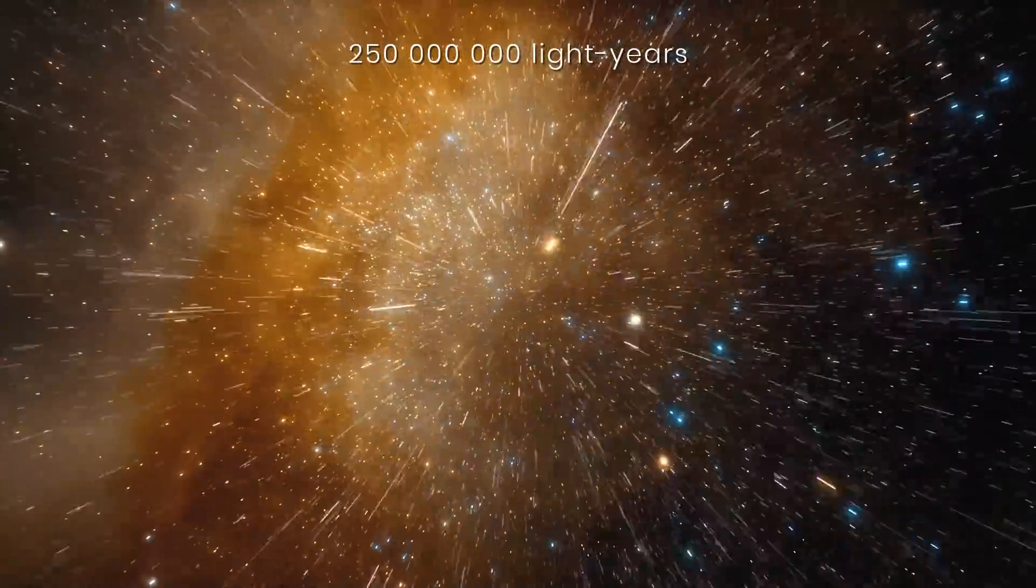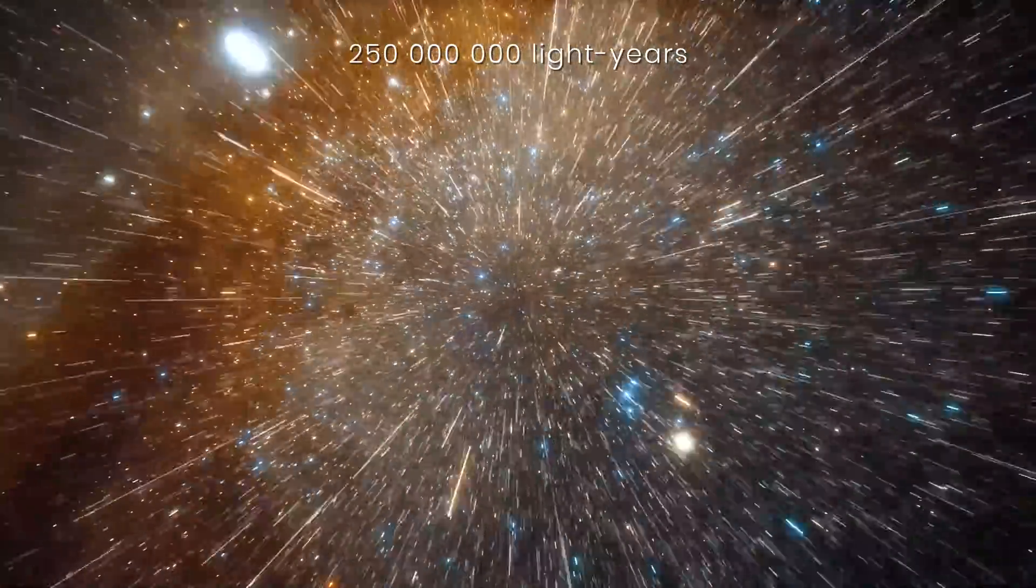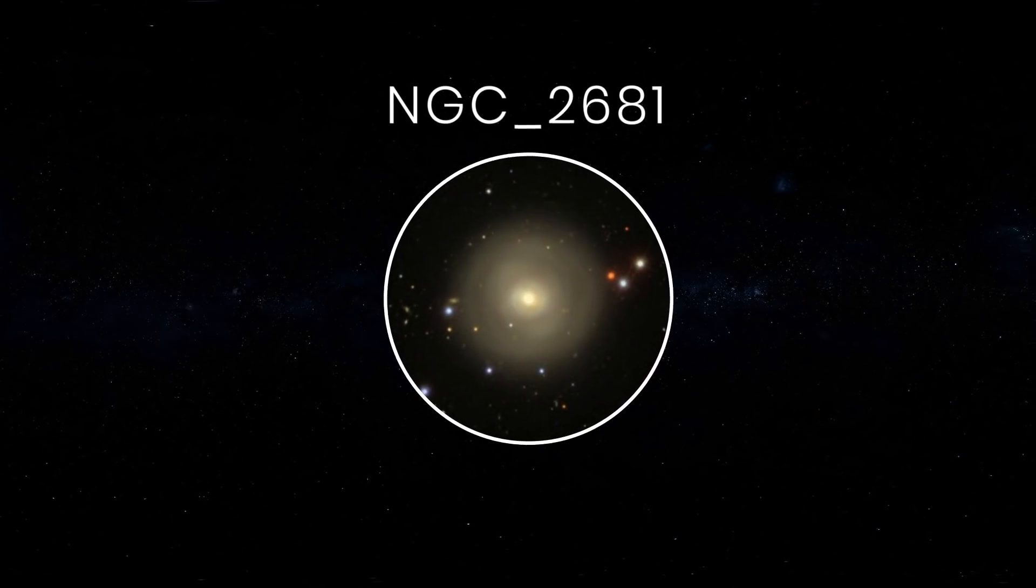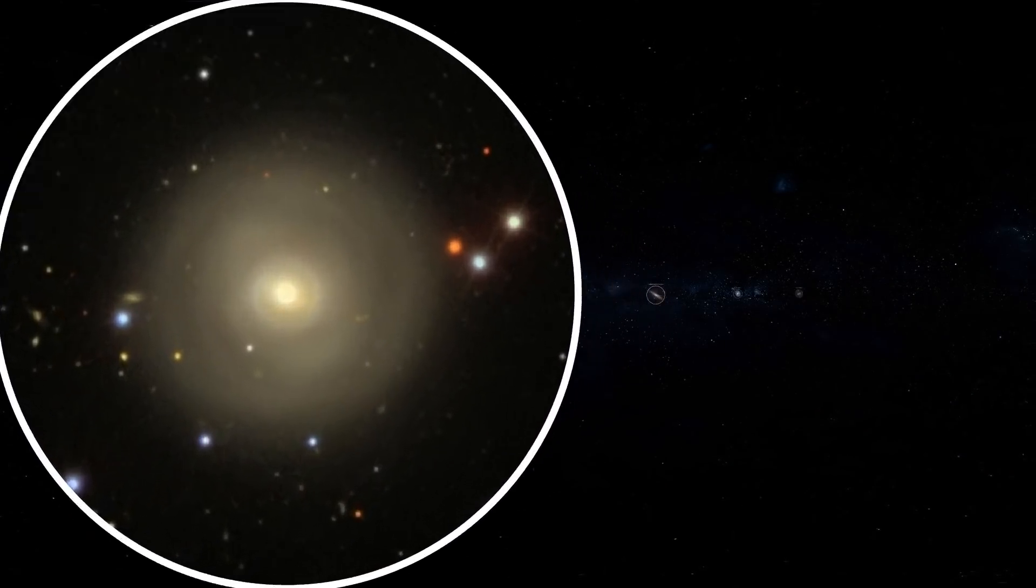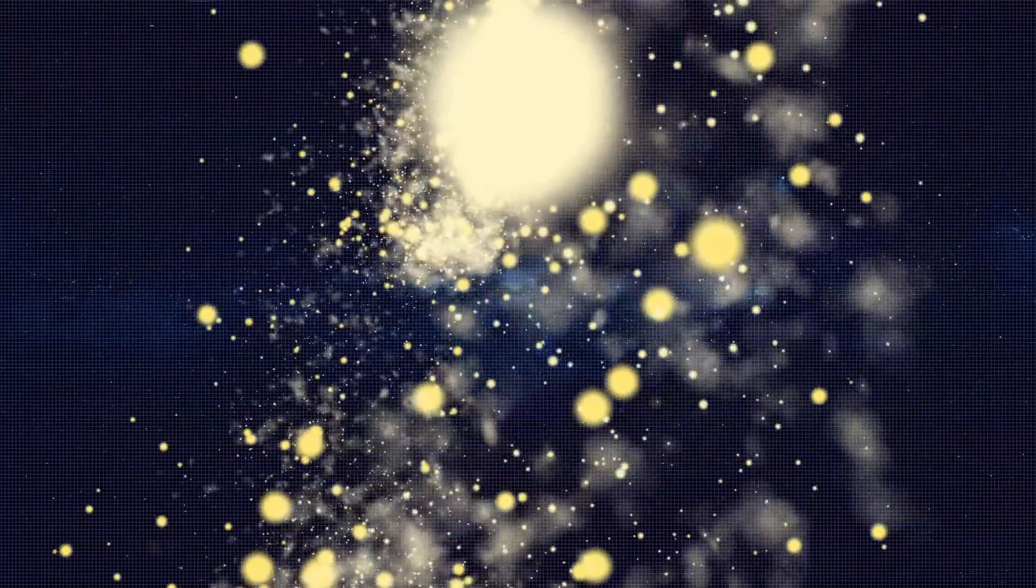AGC 114905 is about 250 million light-years away, and is classified as an ultra-diffuse dwarf galaxy, referring to its luminosity and not its size, as it's about the same size as our Milky Way galaxy. However, it contains a thousand times less stars.